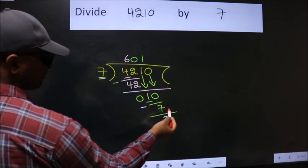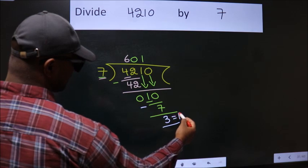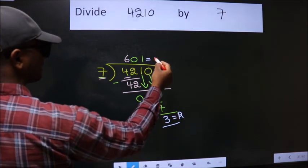No more numbers to bring it down. So we stop here. This is our remainder. This is our quotient.